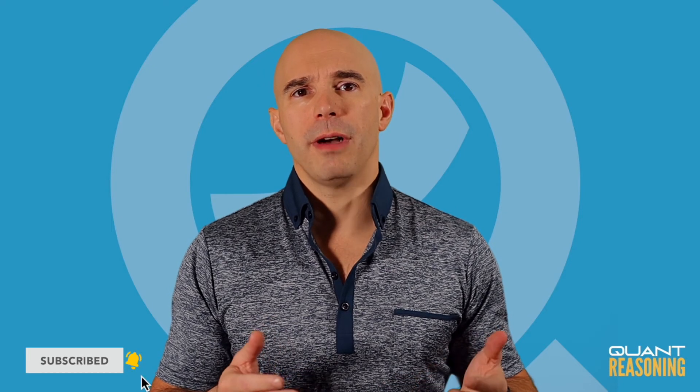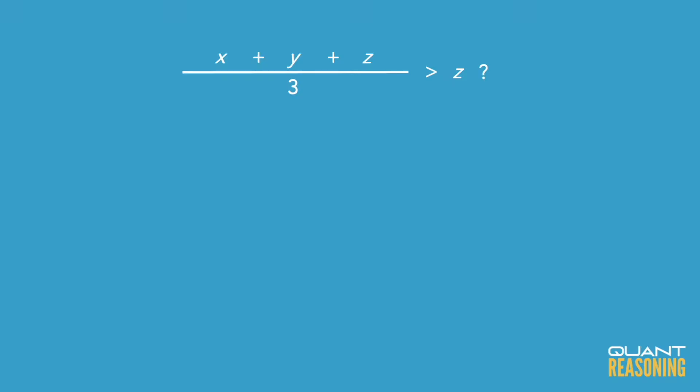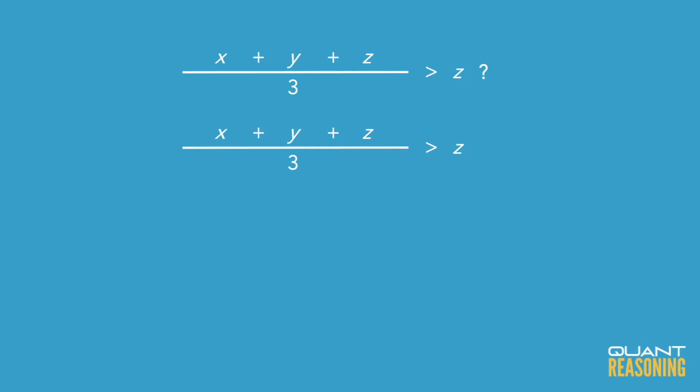Now statement one is a bit more challenging to evaluate. We might benefit from doing a little bit of algebra here, because in order for the average to be greater than z, we would have to say that (x + y + z) / 3 — that's the definition of average, a sum divided by the number of terms — would have to be greater than z.